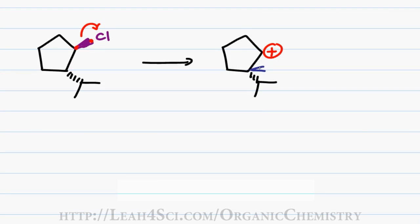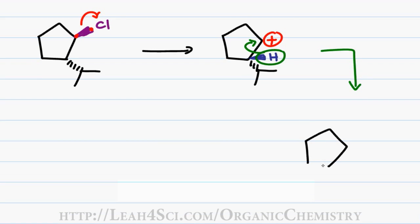Don't forget that we have that invisible hydrogen sitting on the tertiary position directly near the carbocation and in the next step we have a hydride shift where hydrogen takes both of its bonding electrons, moves over to that secondary position giving us a more stable tertiary carbocation.